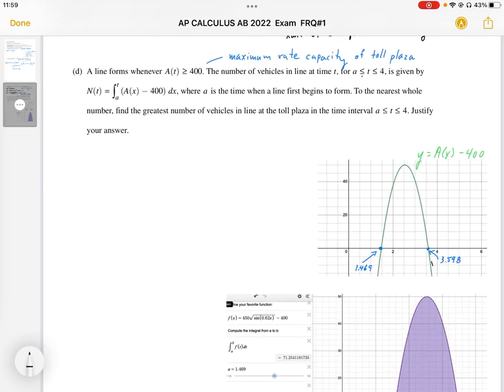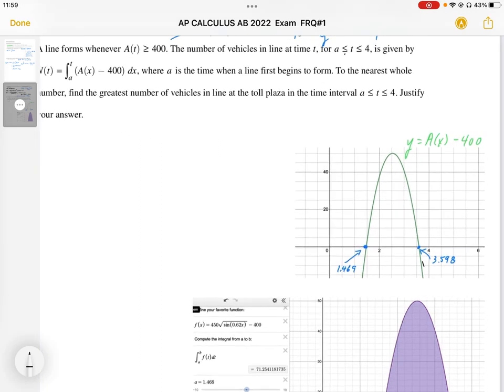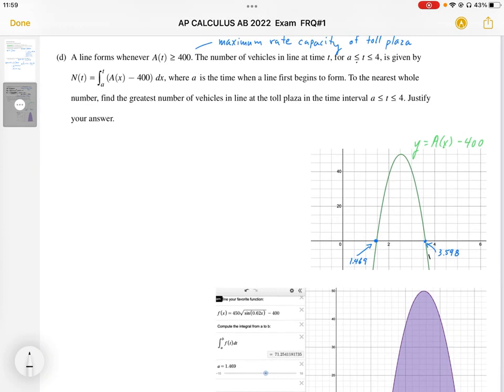The problem asks: to the nearest whole number, find the greatest number of vehicles in line at the toll plaza in the time interval A to 4, and justify your answer. The justification is that when A(x) - 400 is greater than 0, we have cars lining up.